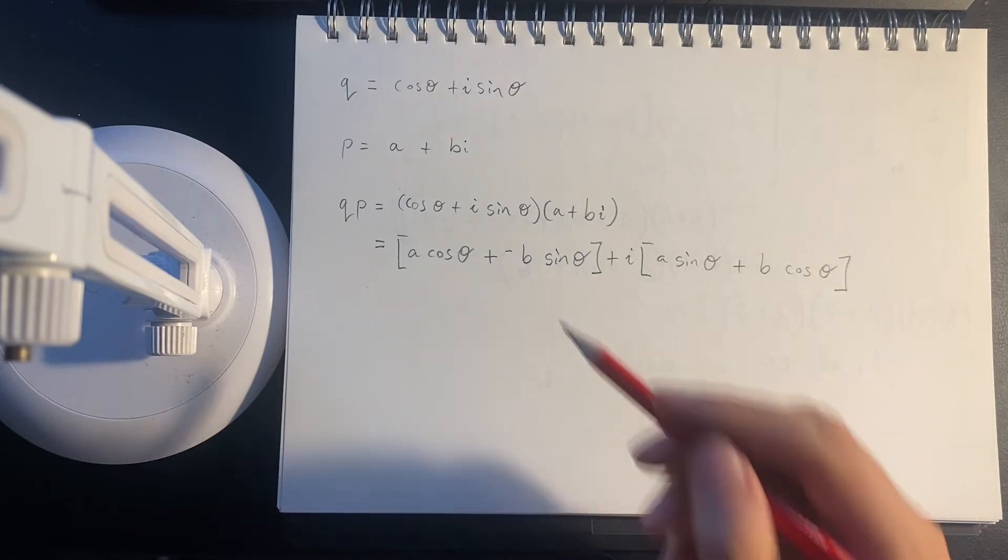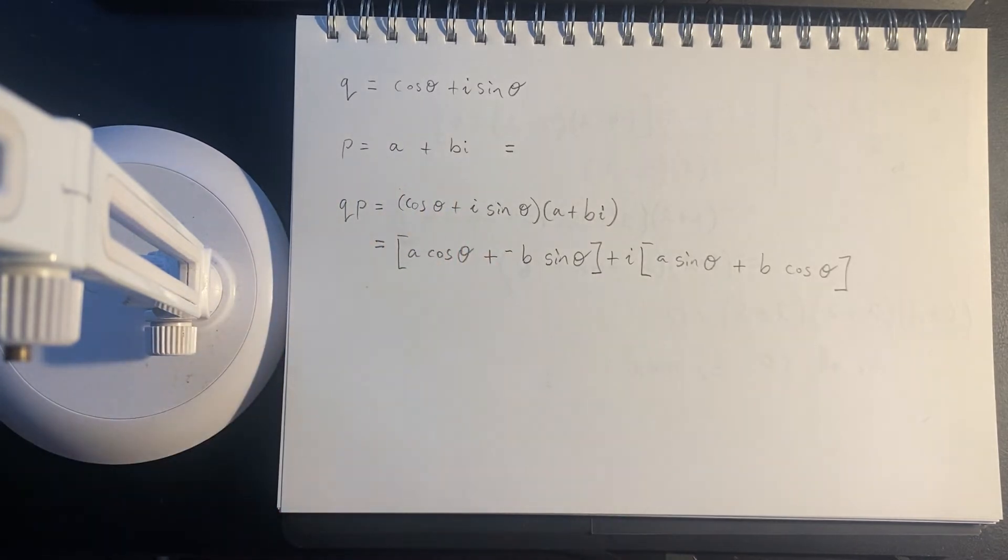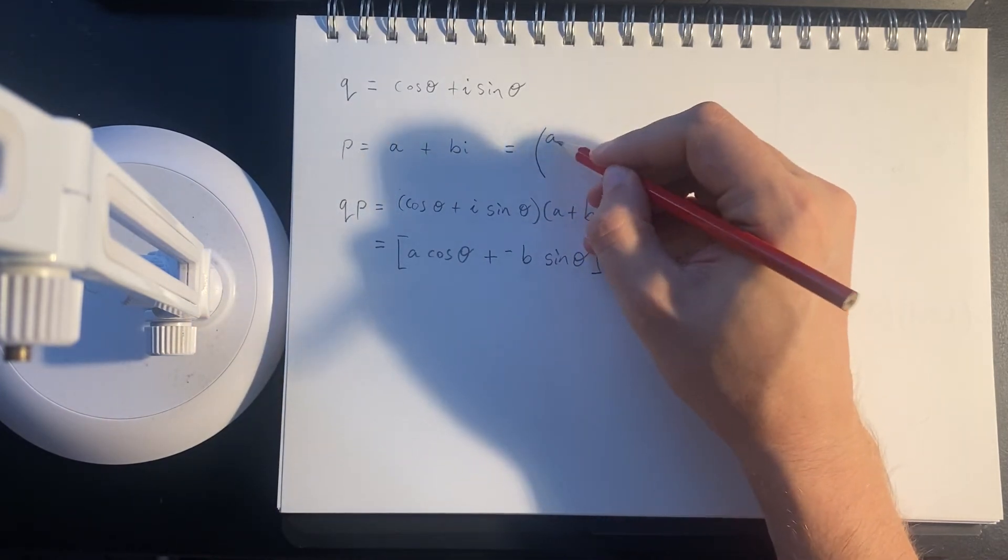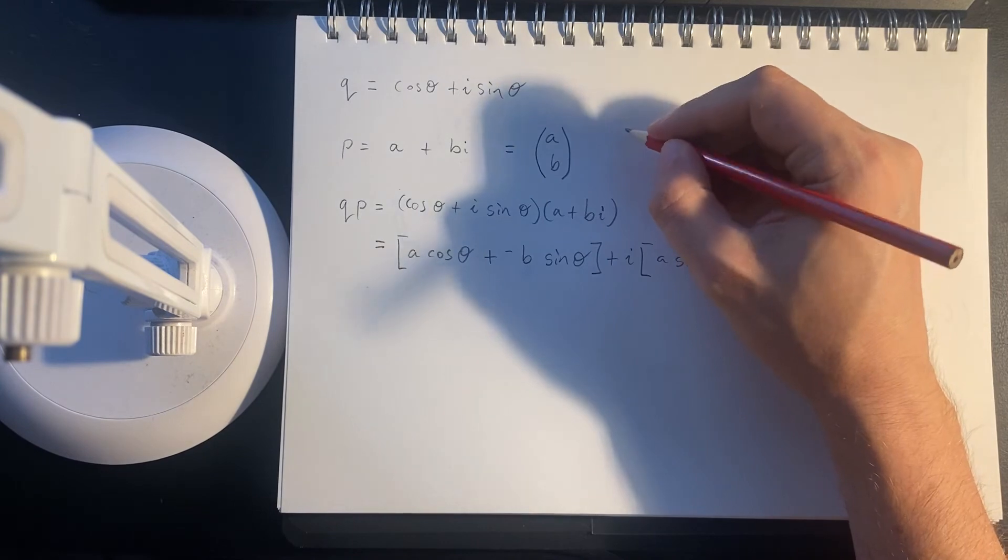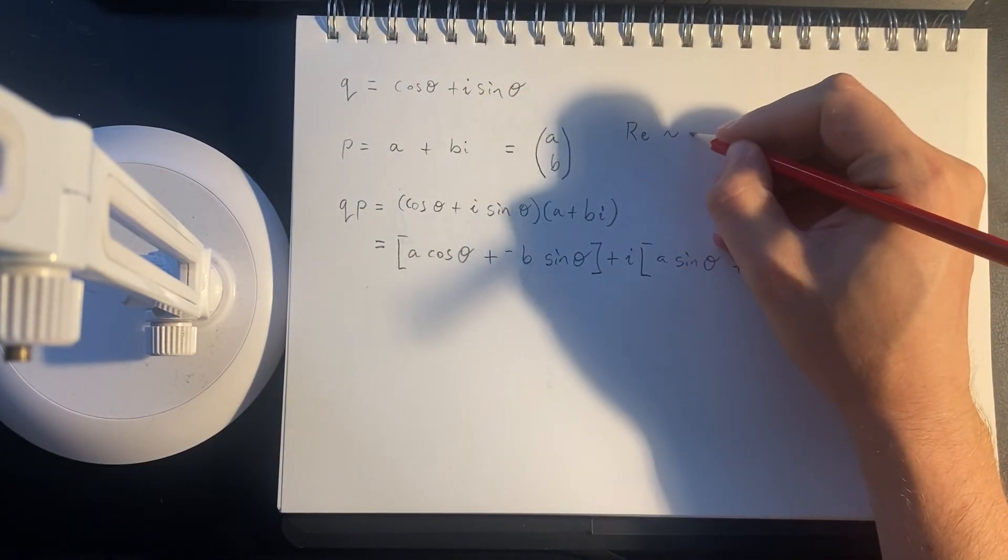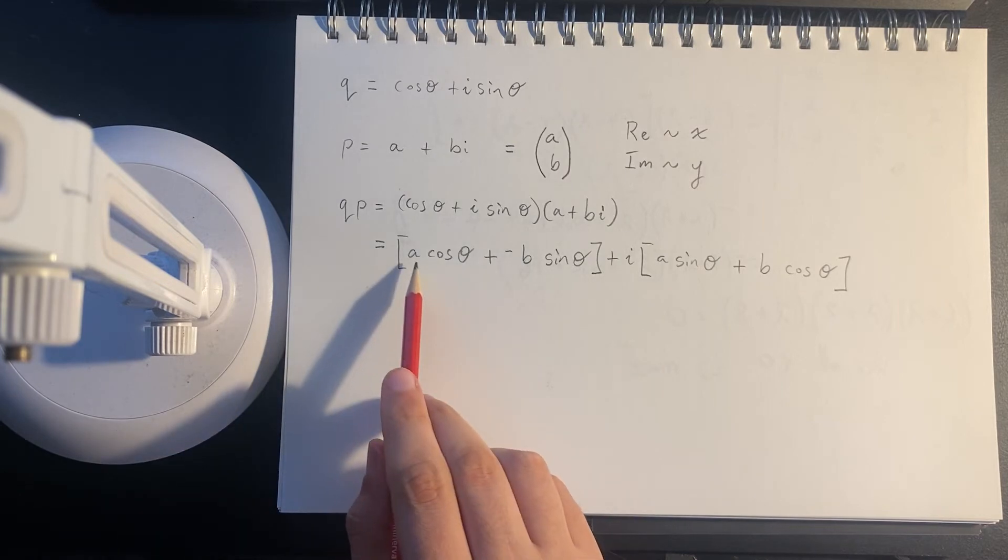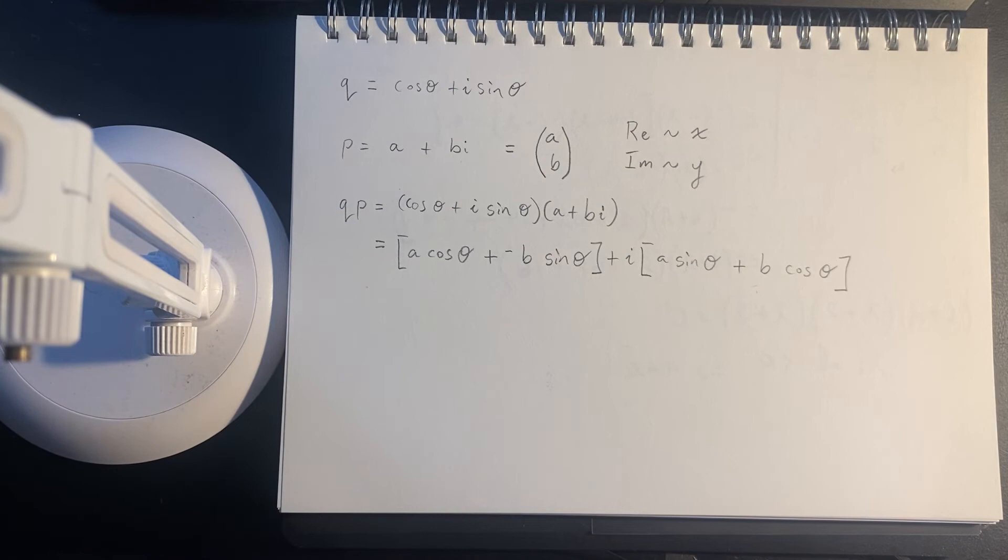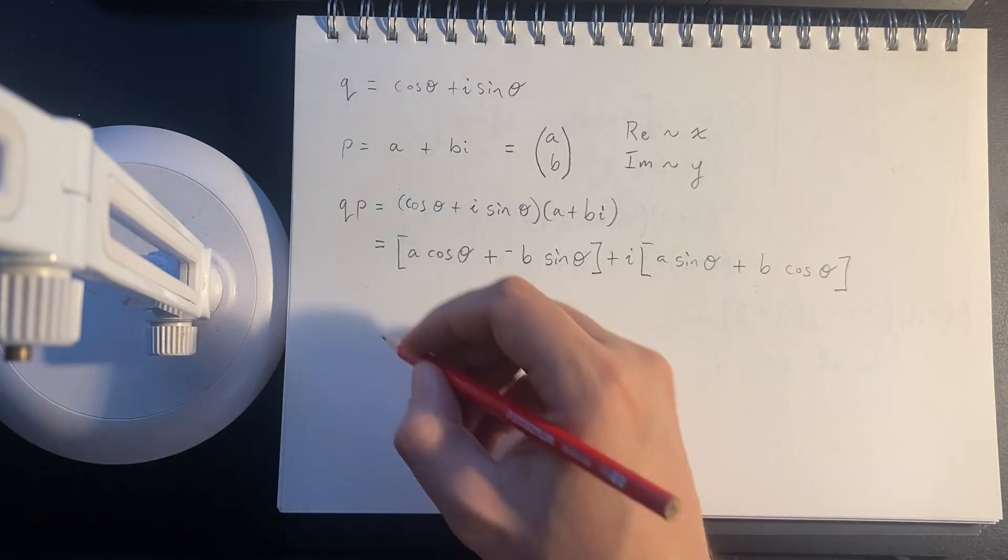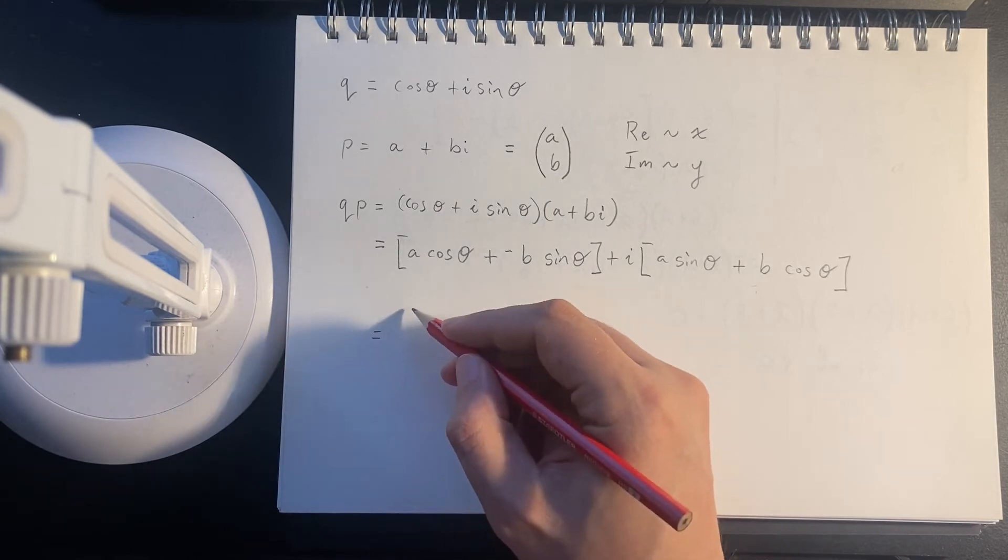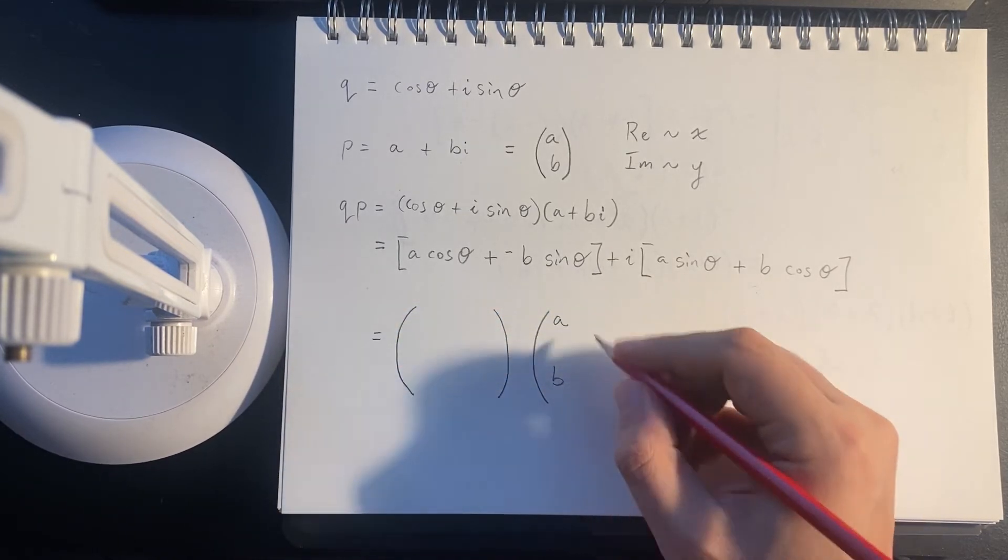But everything has an analogy, right? Because this a plus bi is a complex number, but it has two components. So it's basically a... What am I thinking? It's isomorphic to a two-dimensional vector. So then if we were to say, well, the real axis is sort of isomorphic to x, and the imaginary axis is sort of isomorphic to y, then this result... We know that multiplication by complex numbers represents rotation. The result is a vector. So if we were to write this in matrix form, we have something times a plus something times b.